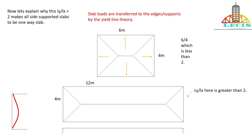I hope you understand the concept of one-way and two-way slabs. In the next video, we will find out the preliminary size of slabs for a commercial building. To know more about structural analysis and structures, please subscribe to our channel Civil Laces. Do like, share, and comment on this video. Thank you.